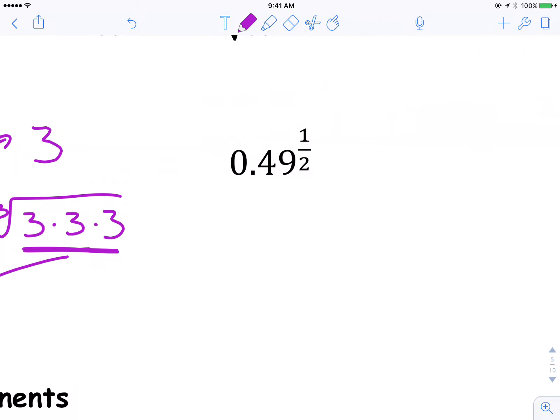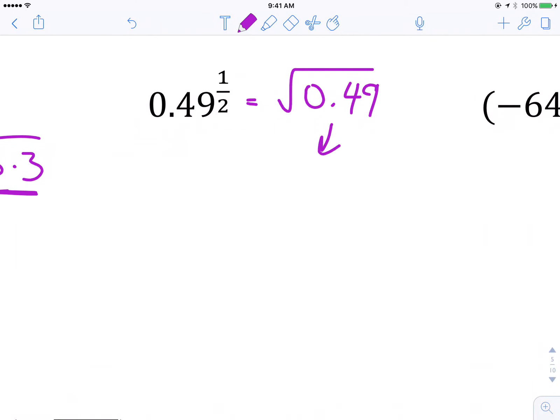0.49 raised to the power of 1 half could also be written as the square root of 0.49. 0.49 square root is going to be the square root of 0.7 times 0.7. There's our pair. Square root. Out comes 0.7.